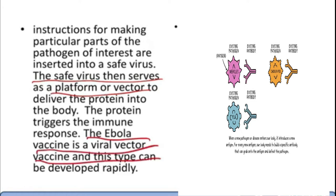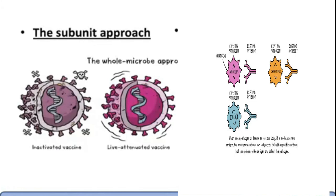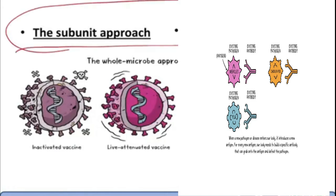The Ebola vaccine is a viral vector vaccine, and this type can be developed rapidly. Ebola was a deadly disease but it didn't turn into a pandemic — it was curtailed in Africa and South America. Ebola started mutating and lost its contagious spreading ability, though it remained deadly before being curtailed. Ebola is not such a threat as COVID-19. The other approach is the subunit approach, which is somewhat different from the whole microbe approach.